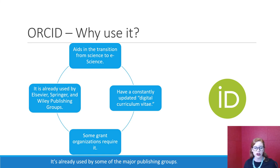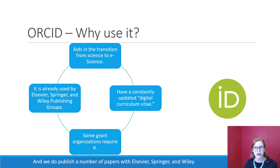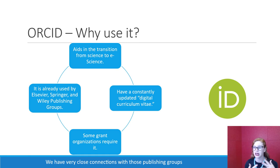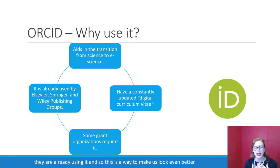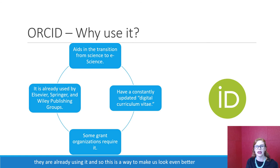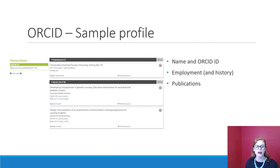ORCID is already used by some of the major publishing groups. We publish a number of papers with Elsevier, Springer, and Wiley, and we have very close connections with those publishing groups. They are already using ORCID, so this is a way to make us look even better when we publish with them.